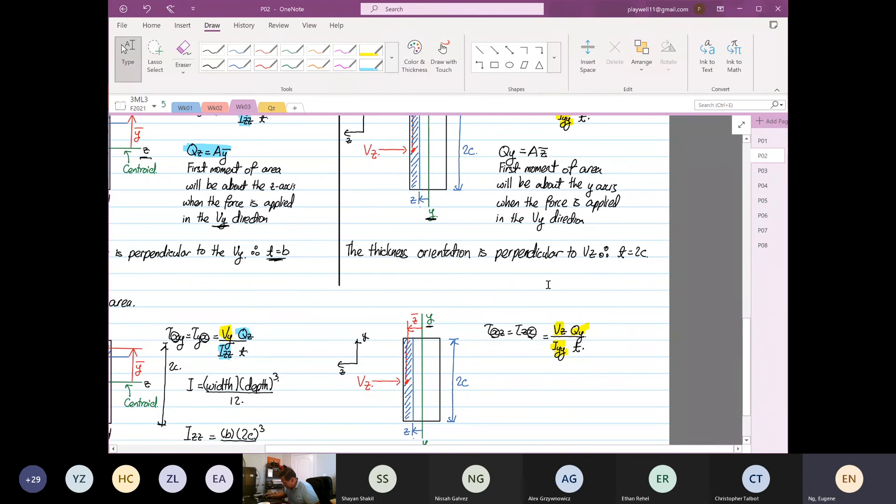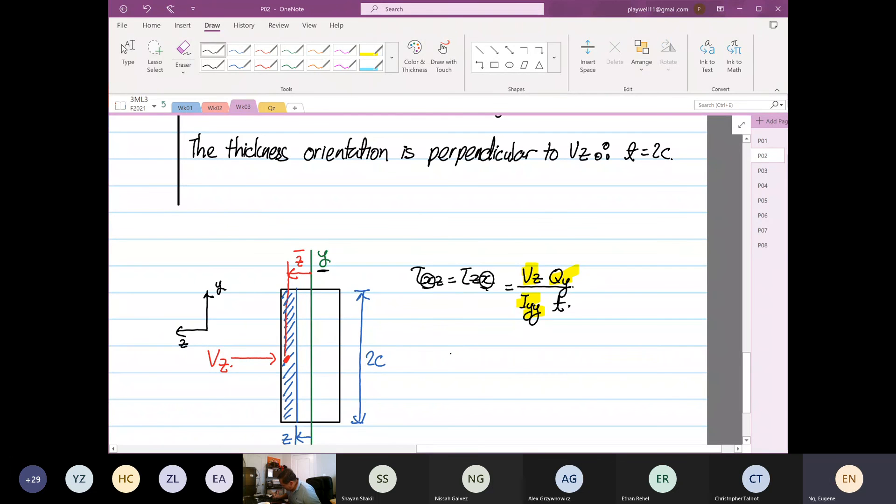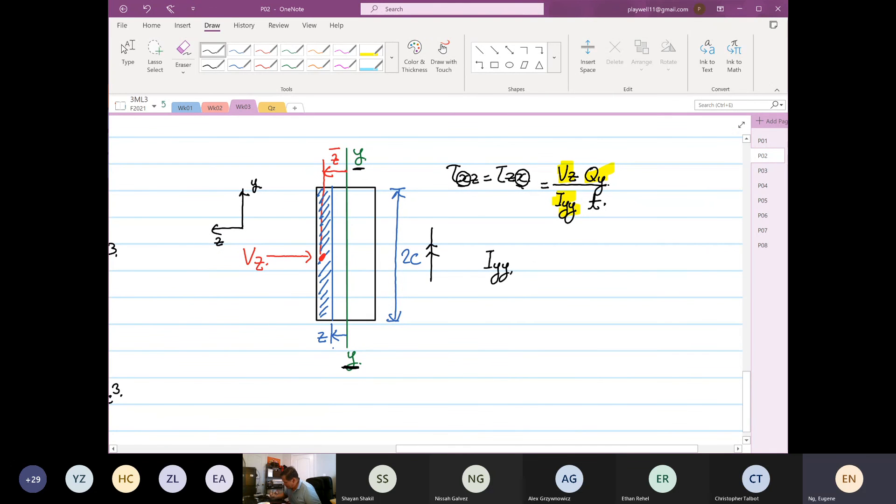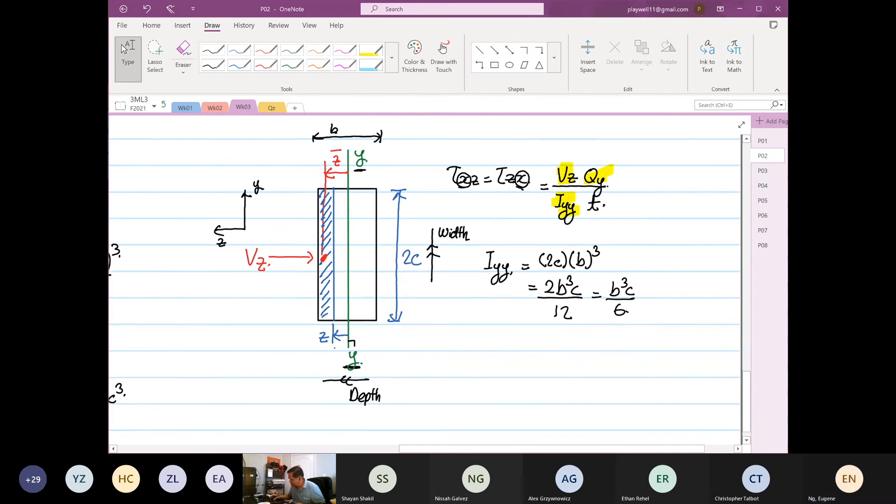So if you see for this case, we are interested in Iyy now. So YY axis. This axis now parallel to the axis. So this is now the width, and perpendicular to the YY axis, this is the depth. So applying the same formula, the width is 2C and the depth is B. Because the distance from here to here is equal to B. So this is equal to 2B cubed C over 12, which is equal to B cubed C over 6.